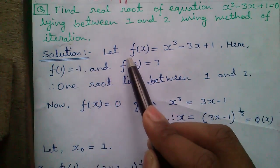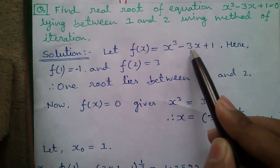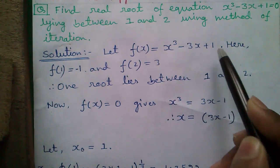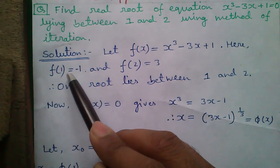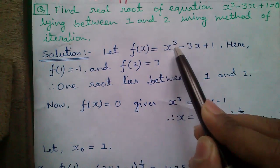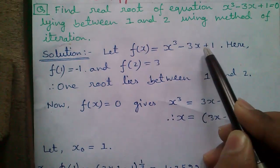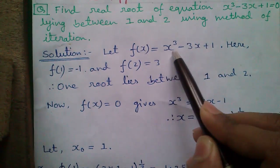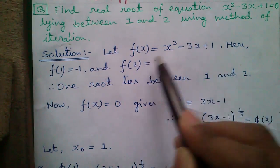So our solution: Let f(x) = x³ - 3x + 1, given in the question. Here, f(1) = -1. That means if we substitute 1 in place of x in the equation, you will get -1. 1³ - 3(1) + 1 = 1 - 3 + 1 = -1.